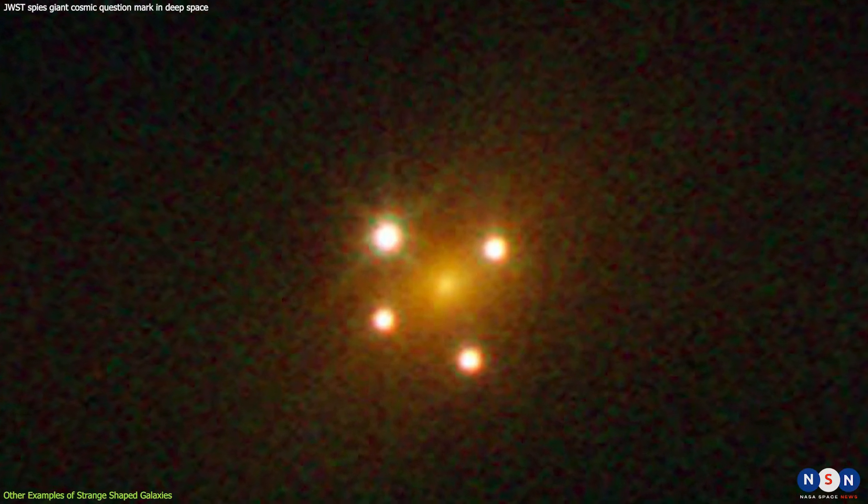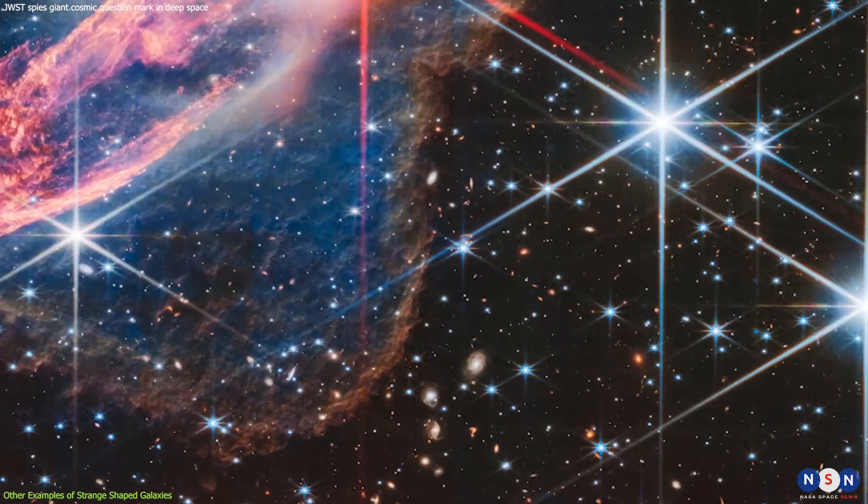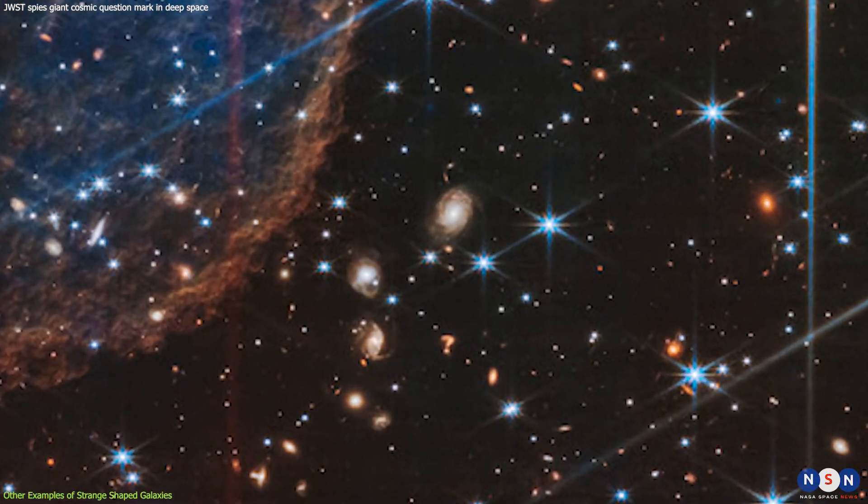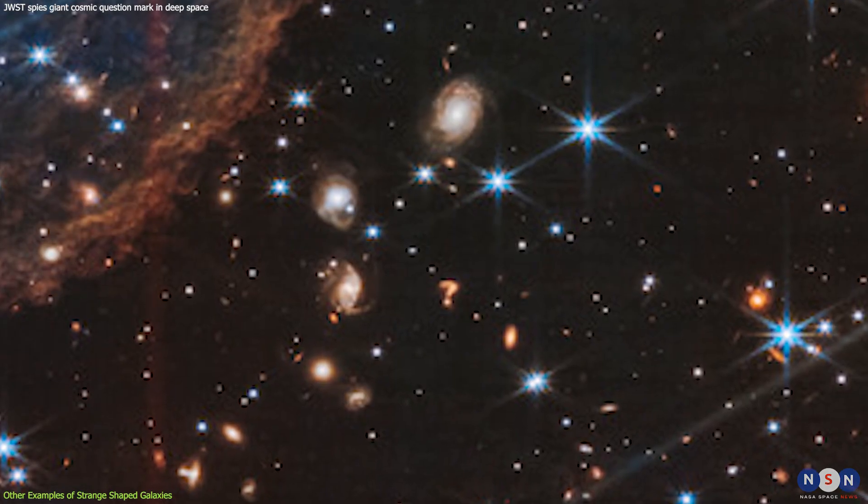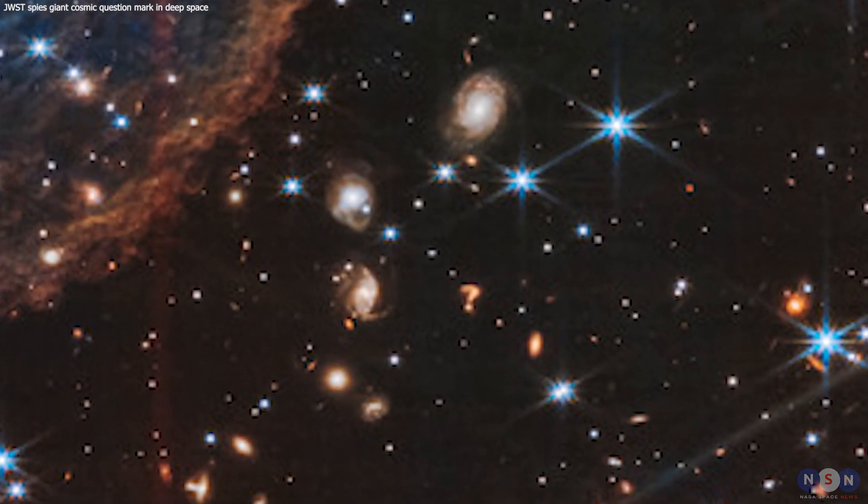These are just some of the examples of how dark matter and gravitational lensing can create strange-shaped galaxies in the sky. By studying these phenomena with telescopes like James Webb, we can learn more about the nature and distribution of dark matter and how it affects the evolution of galaxies and the structure of the universe.